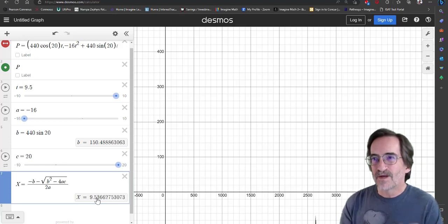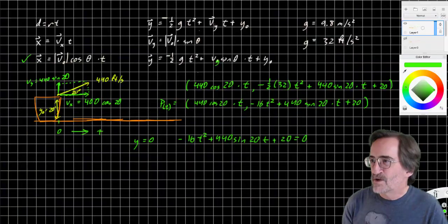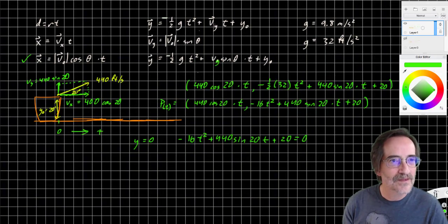All right. So that's how to write a parametric equation to model motion under gravity. Thank you.